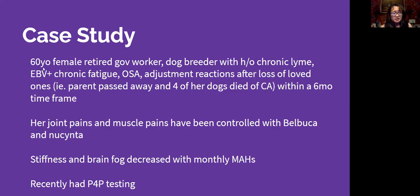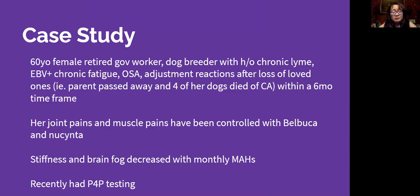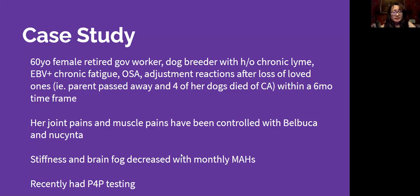The first case is a 60-year-old retired government worker and dog breeder with a history of chronic Lyme disease, Epstein-Barr virus, chronic fatigue, and obstructive sleep apnea. She was going through a significant loss, feeling depressed after losing a parent and four of her breeding dogs to cancer within six months. She is fairly well controlled on opioids (MME under 100), which keep her functional with joint and muscle pain, though she has stiffness and brain fog, which had been decreased with monthly ozone IVs for about a year.